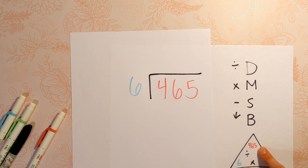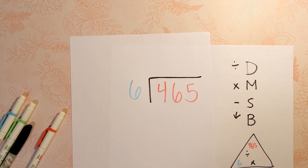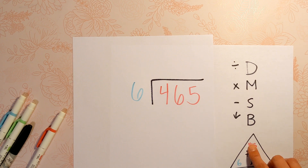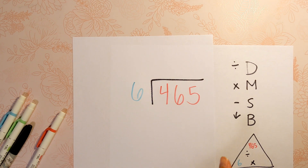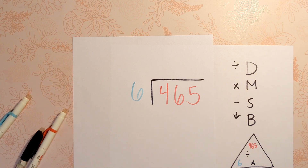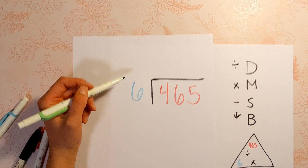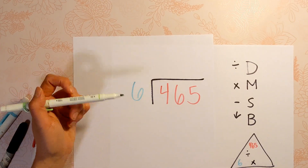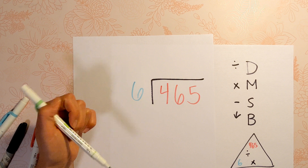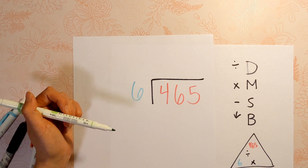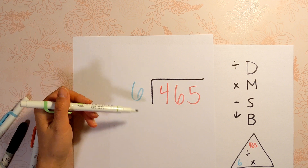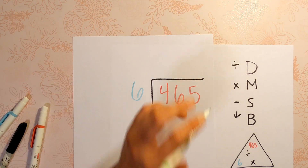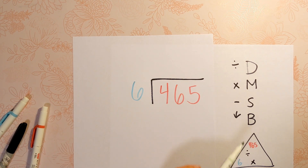Make sure you draw a fact triangle so you can see what we're doing here. We're doing 465 divided by 6, but we're also saying 6 times what equals 465? Or how many times do I skip count by 6 to get to 465? How many 6's fit into 465?